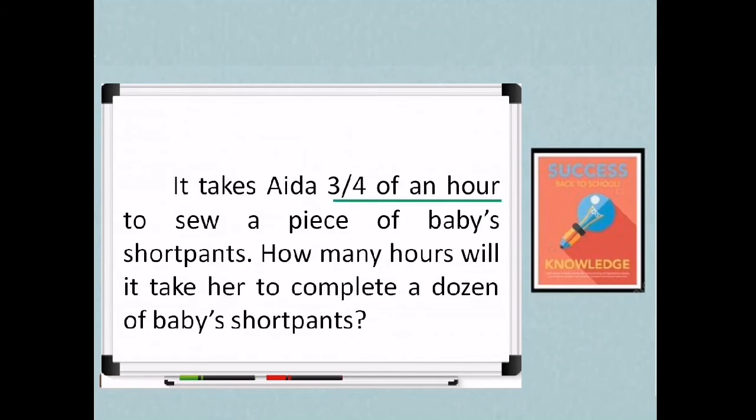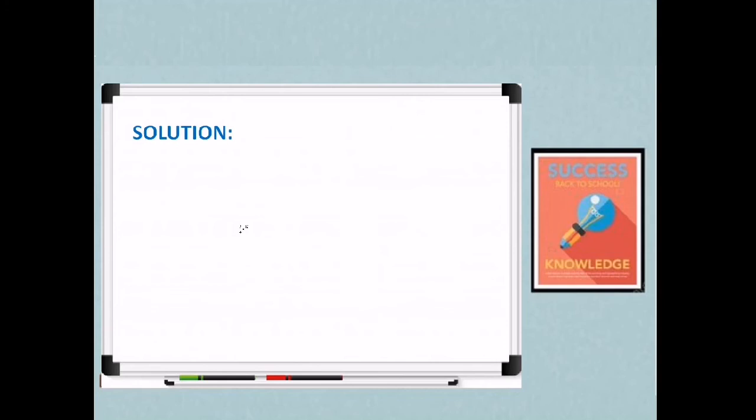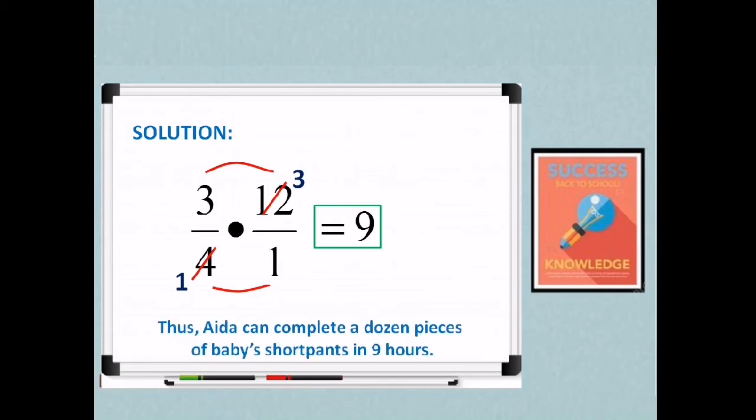So going back to our problem. Our given is three-fourths of an hour, and then you have a dozen. The meaning of dozen is twelve pieces. So when it's one baby's short pants, it takes three-fourths of an hour. How about twelve pieces? So therefore, to get the total number of hours to complete a dozen of short pants, we need to multiply three-fourths by twelve. You'll notice for whole numbers, the denominator is one. So that is three-fourths times twelve over one. Cancel twelve and four. Both can be divided by four. Twelve divided by four is three. Then four divided by four is one. Then multiply. Three times three is nine. Our denominator is one, we don't need to include it. So therefore, nine hours. So for our conclusion, thus, Ida can complete a dozen pieces of baby's short pants in nine hours.